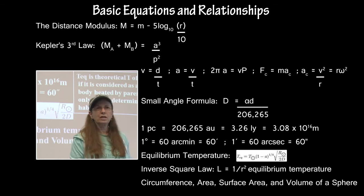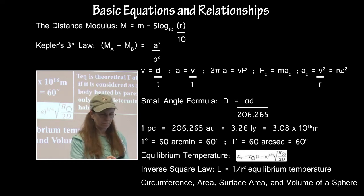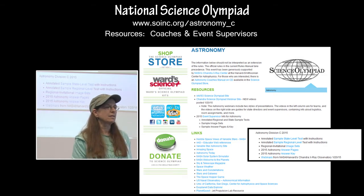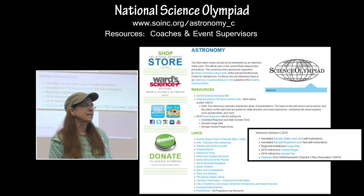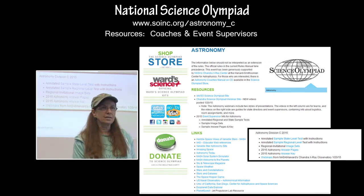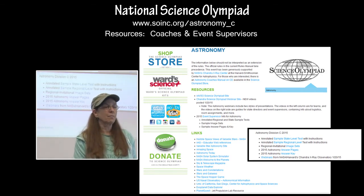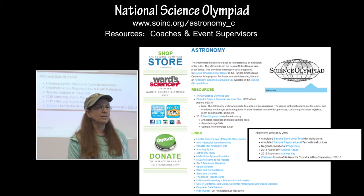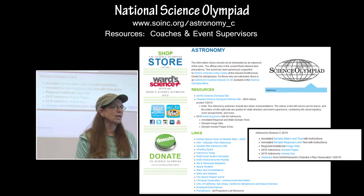That helps to determine if that planet is in the habitability zone. The National Science Olympiad website has a lot of resources. There is an annotated sample exam from last year, a regional invitational sample event from last year, and the 2015 astronomy event with the answer key is there, so you can download that — because the format for this event this year is going to be exactly the same as it was last year.